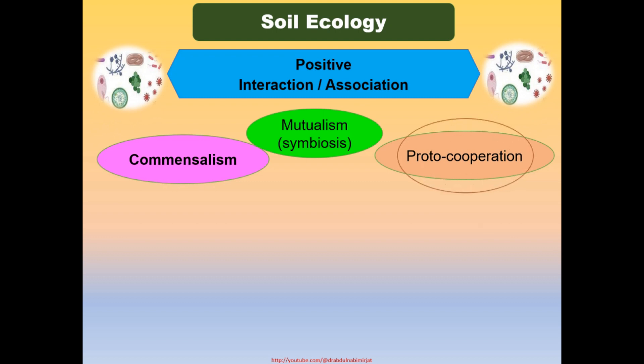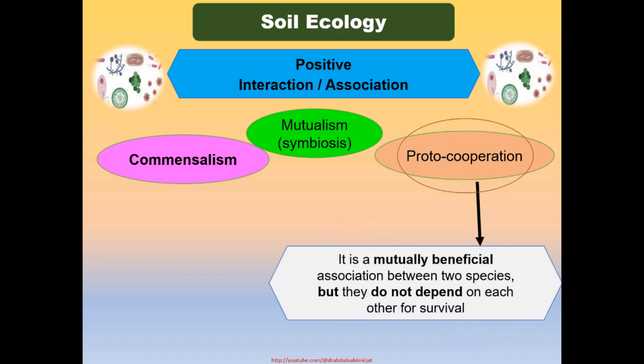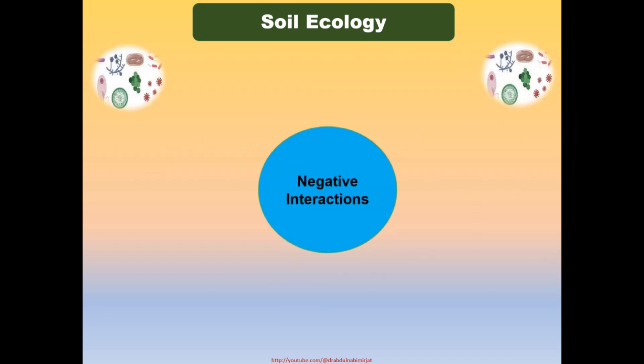Proto-cooperation is a mutually beneficial association between two species, but they do not depend on each other for survival. An example occurs between soil bacteria and plants growing in the soil. None of these species rely on the relationship for survival, but fungi, bacteria, and higher plants all take part in shaping soil composition and fertility.